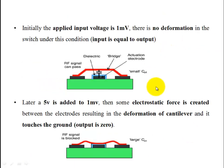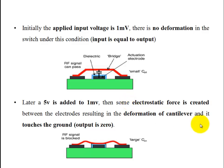Initially, a low voltage causes bridge deformation. The bridge and the substrate form a capacitor. When the bridge collapses and touches the ground, the capacitor is formed between the bridge and the substrate.